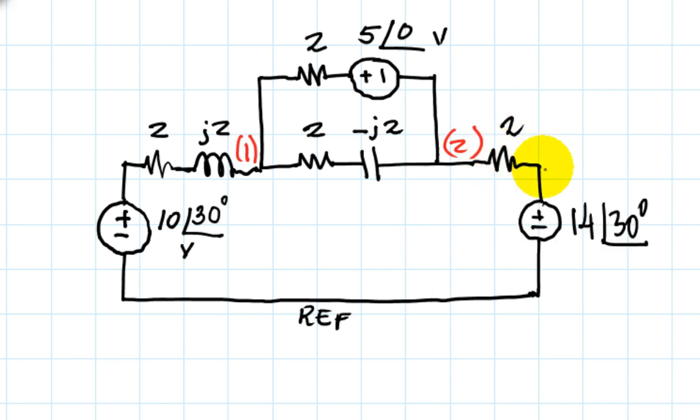Like that. 2-Ohms in series with the 14 volts and 30 degrees source, these are the volts. And now we can concentrate our attention on the voltage source in series with the resistor on the very top branch.